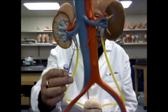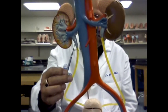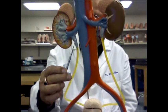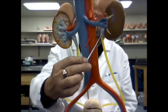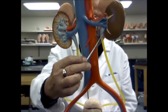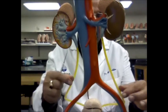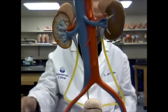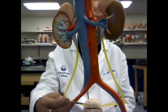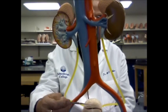This is the renal pelvis, that is the renal pelvis of the left kidney. The yellow tubings are the ureters, this is the urinary bladder.